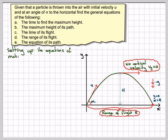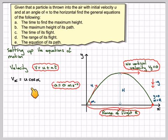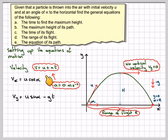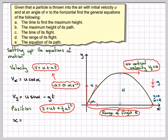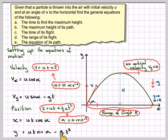Setting up the equations of motion for velocity, we use v = u + at. The x-component of velocity, vx, will be u cos(alpha) — there's no gravity acting on it. And the y-component will be u sin(alpha) minus g·t, because gravity acts on the vertical component. For position, using s = ut + ½at², x = u·t·cos(alpha) since there's no gravity in the horizontal direction, and y = u·t·sin(alpha) − (g/2)·t².